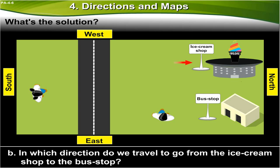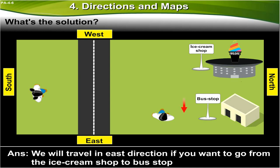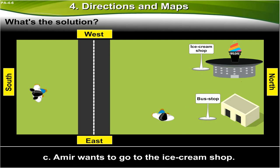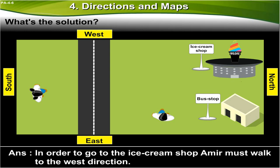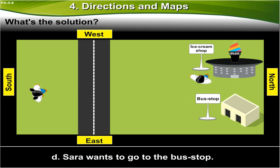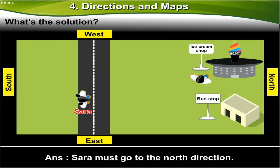B. In which direction do we travel to go from the ice cream shop to the bus stop? We will travel in the east direction if we want to go from the ice cream shop to the bus stop. C. Aamir wants to go to the ice cream shop. In which direction must he walk? In order to go to the ice cream shop, Aamir must walk towards the west direction. D. Sara wants to go to the bus stop. Sara must go in the north direction.